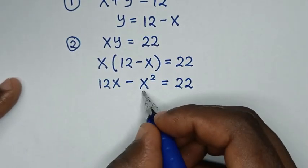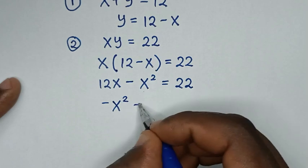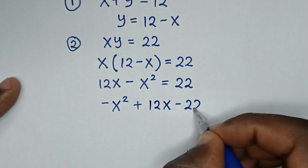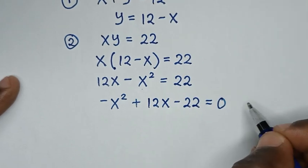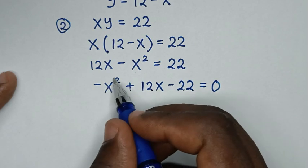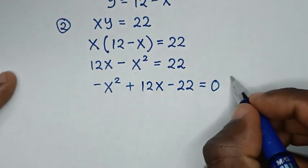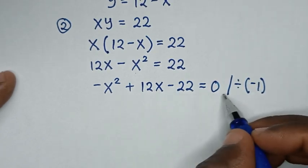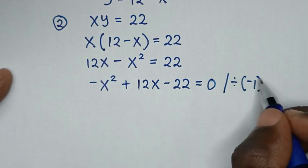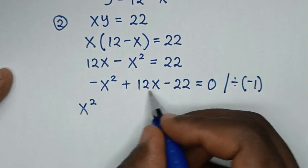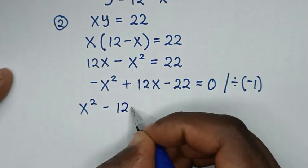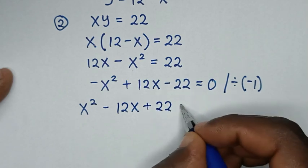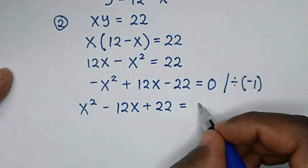Then in the next step, we rearrange: negative x squared plus 12x minus 22 is equal to 0. Then we divide by negative 1 on both sides to make the leading term positive. So negative x squared divided by negative 1 is positive x squared; 12x divided by negative 1 is negative 12x; negative 22 divided by negative 1 is positive 22; equal to 0 divided by negative 1, which is 0.